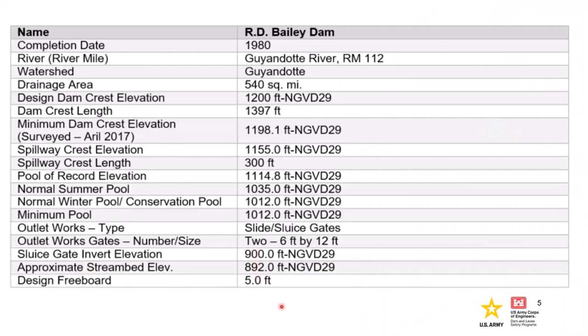Here's a table of pertinent information. Construction was completed in 1980. It has that 540 square mile drainage area. The spillway crest elevation is at 1155 feet, which is equal to the top of the flood pool. The minimum dam crest elevation is about 2 feet lower than the original design crest of 1200 feet. The original design freeboard was 5 feet.